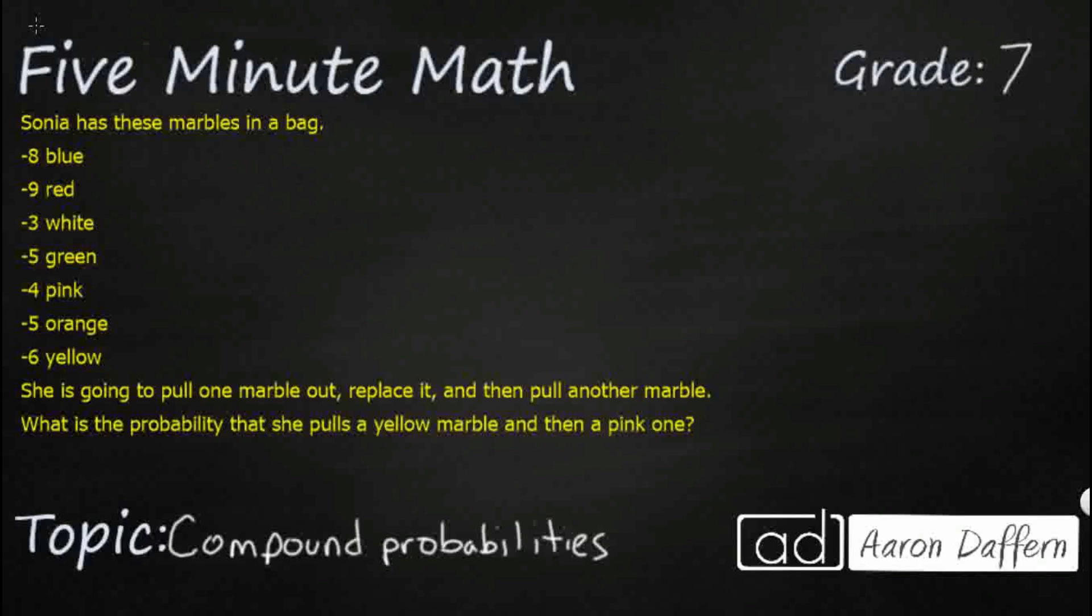So, we have a sample situation here. Sonia has got a whole bunch of marbles in a bag. We have all of your different colors right here, and she's going to pull out one marble. So that in itself is a simple event, like what's the probability of pulling out a red, but then she's going to replace it, which means the total number stays the same, and then she's going to pull out another marble.